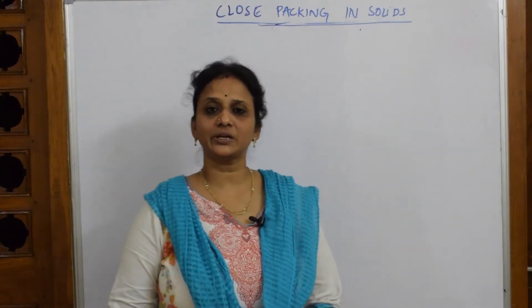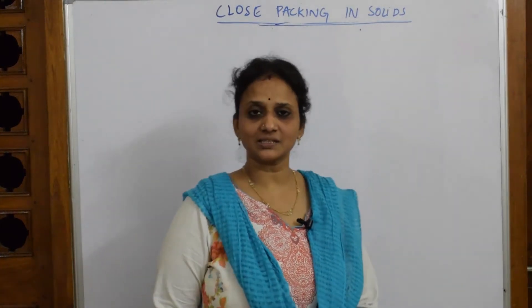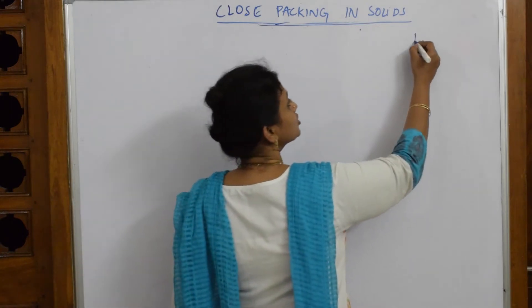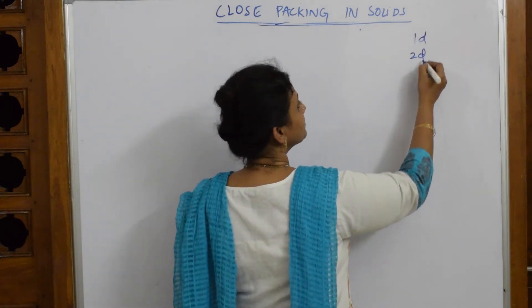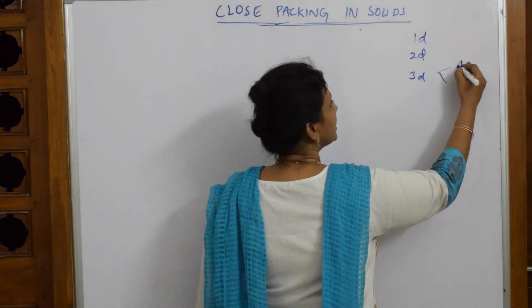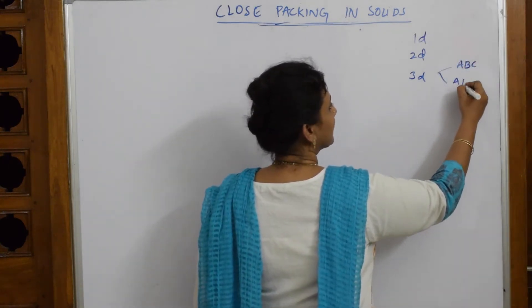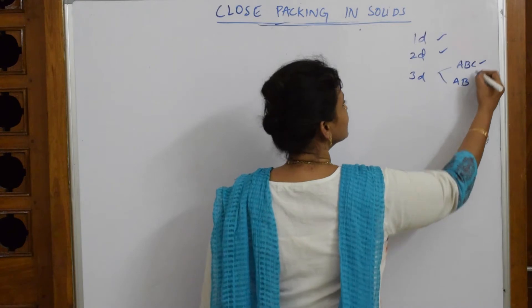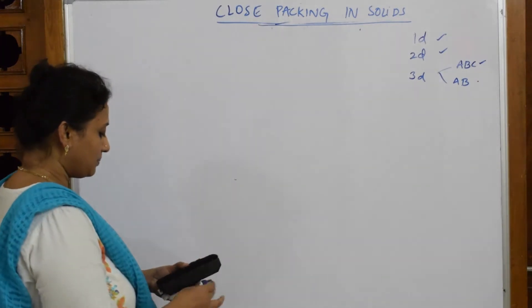We have been studying close packing in solids - close packing in one-dimensional, two-dimensional, and three-dimensional. As I said, there are two types: ABC packing and AB packing. I've done this one, and now I'll be doing AB packing or ABAB packing.